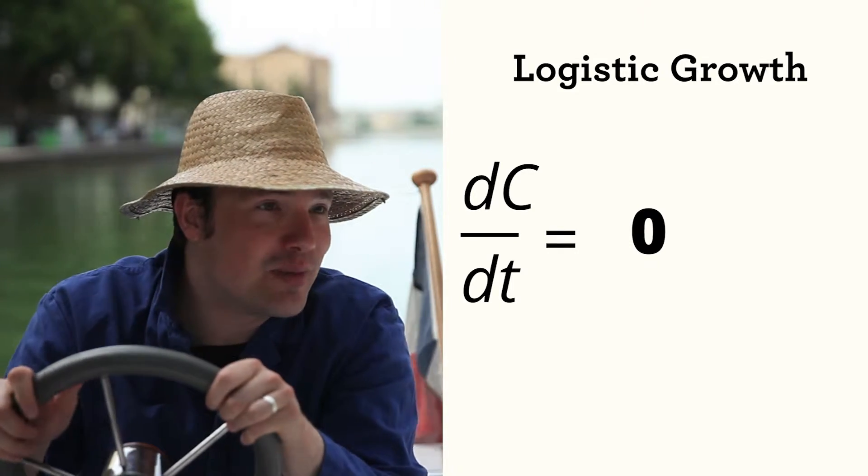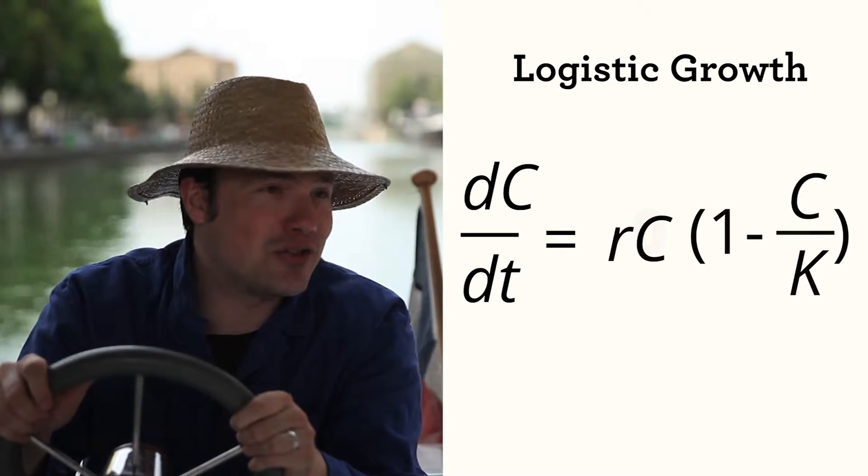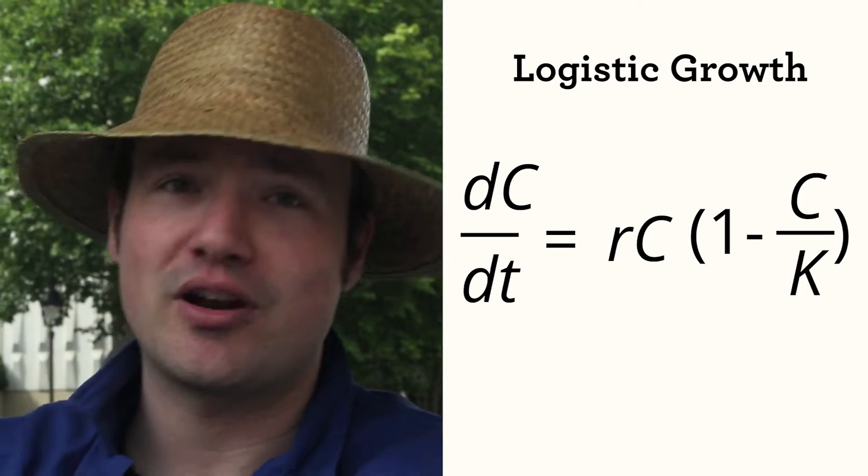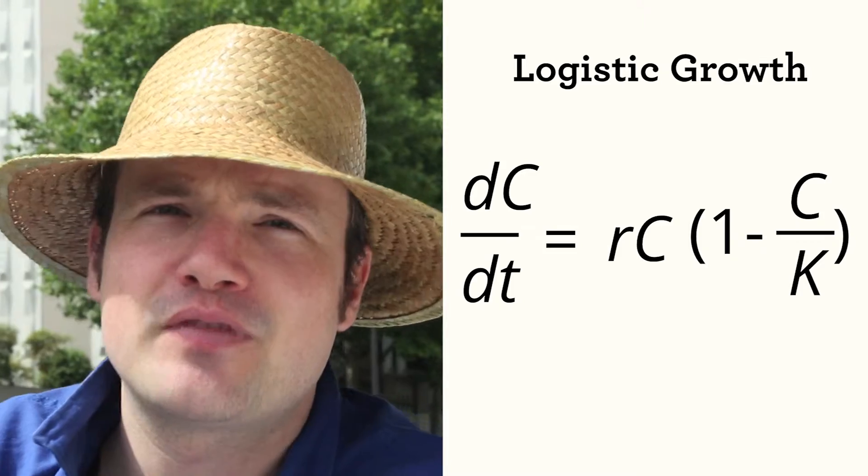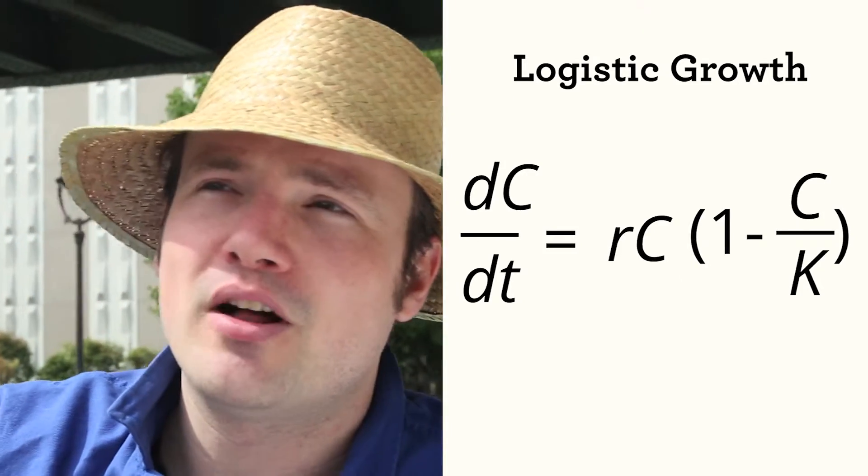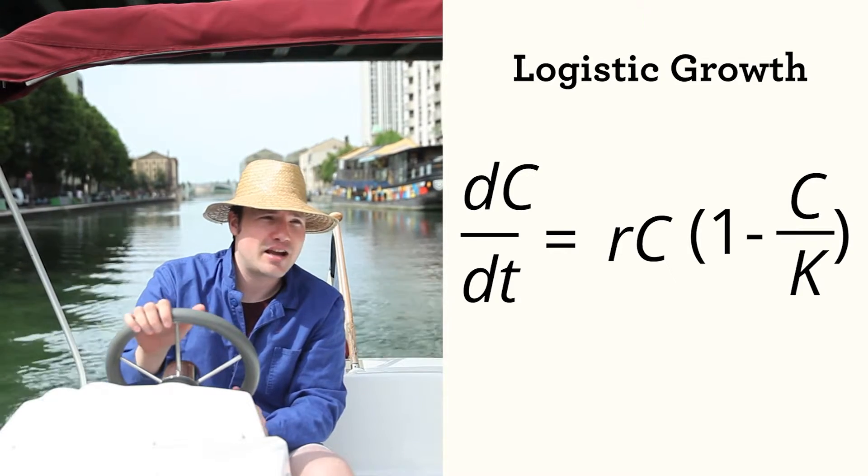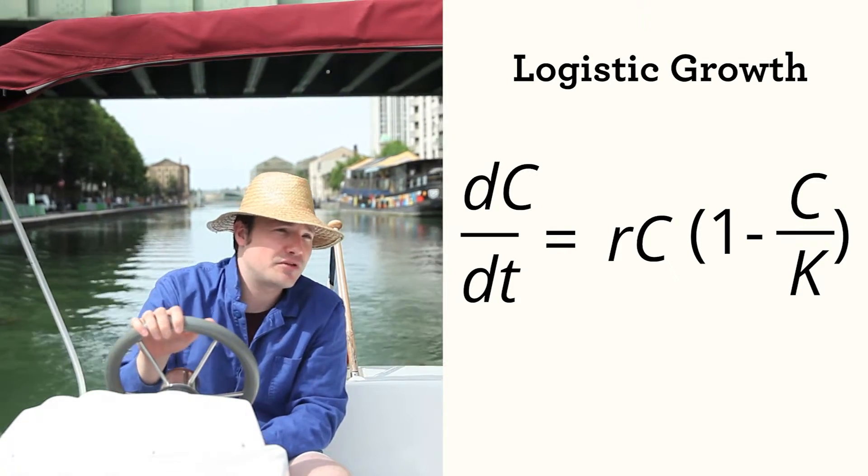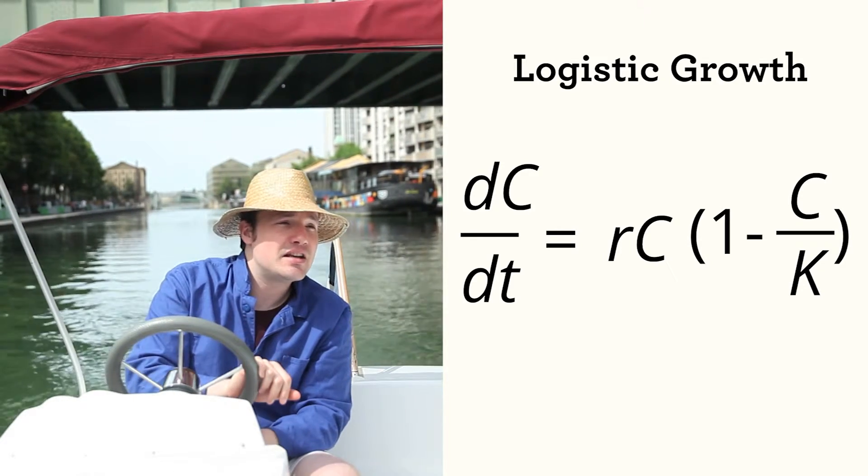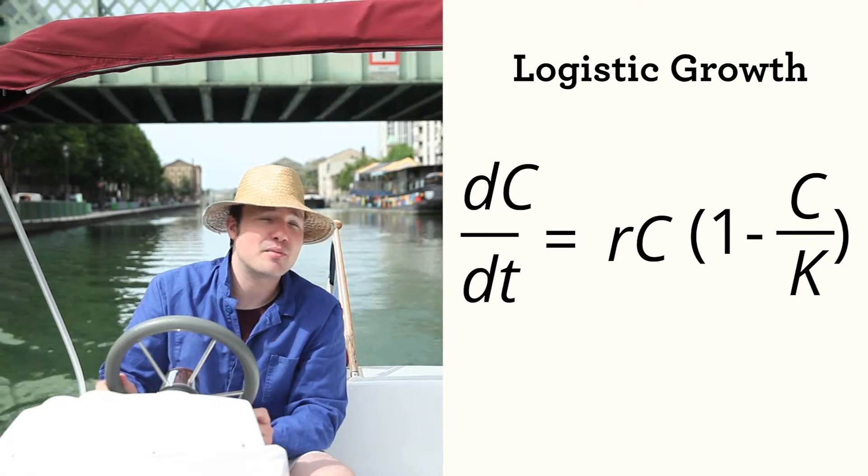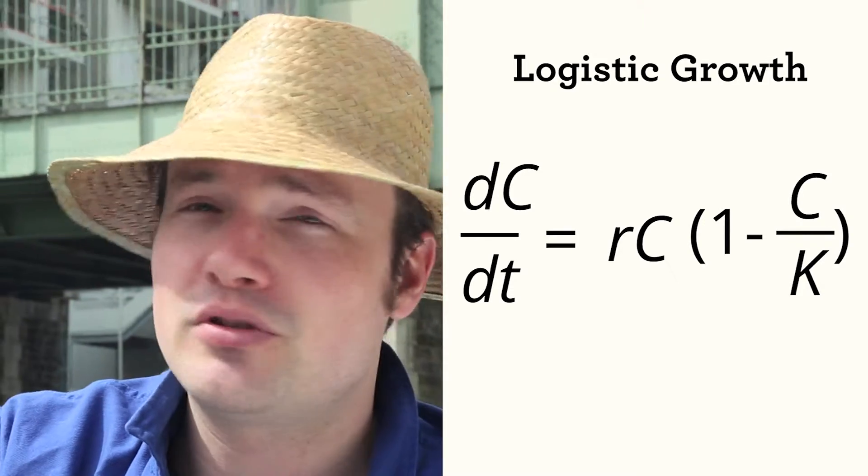Let's try some more limit case analysis to see how this model makes us feel. Does it behave nicely, or does it go crazy for some parameters? How about K? What does this model look like when K gets very small? Well, for small values of K, growth stops quickly. Whenever C equals K, growth stops. And if C somehow becomes larger than K, growth becomes negative, meaning that the number of cells decreases. Totally reasonable.